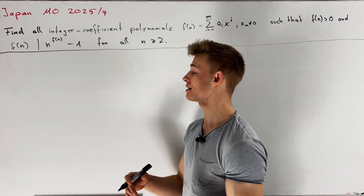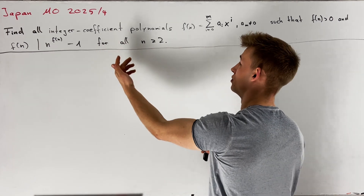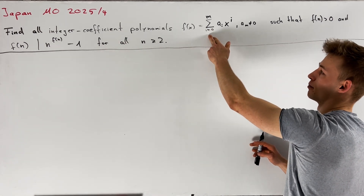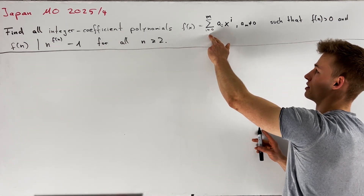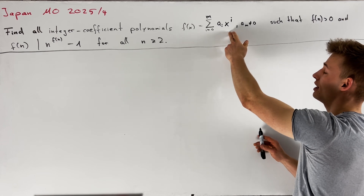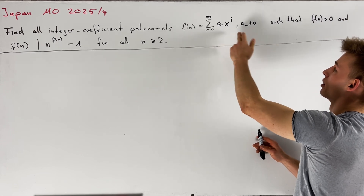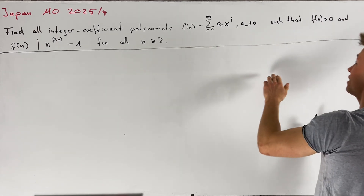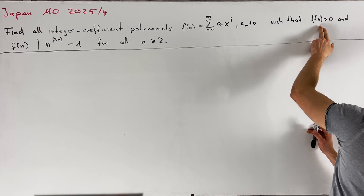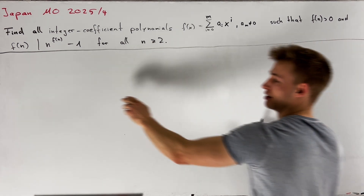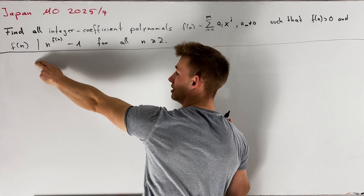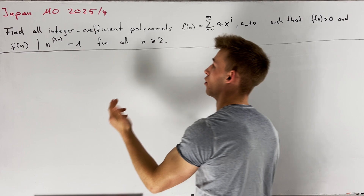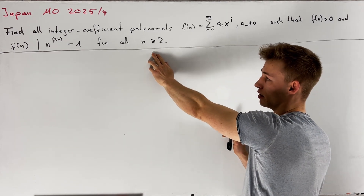We are asked to find all integer coefficient polynomials f(x) equal to the sum from i equals 0 to m of aᵢ·xⁱ, where aₘ is not equal to 0, such that f(n) is greater than 0 and f(n) divides n to the power of f(n) minus 1, for all n greater than or equal to 2.